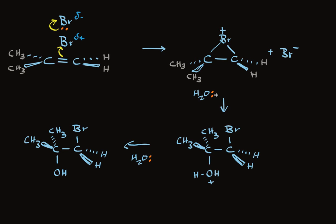To complete the description of the mechanism, water adds to the more substituted carbon as the carbon-bromine bond is breaking. Because water is a neutral nucleophile, it ends up with a positive charge on the oxygen. In a final step, a water molecule removes the proton from this protonated hydroxyl group. This halohydrin is formed with complete regioselectivity.